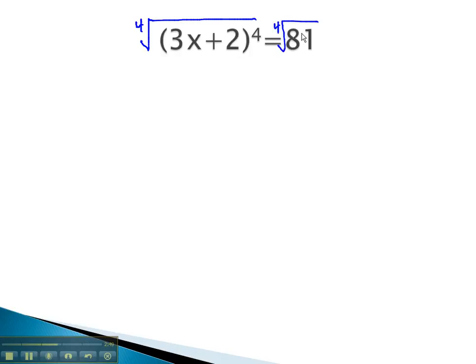We remember that getting rid of an even exponent will result in two solutions. The 3x plus 2 equals the fourth root of 81, which is either positive or negative 3.